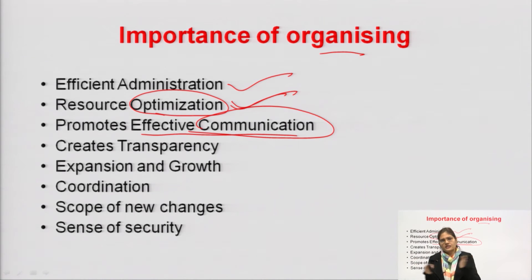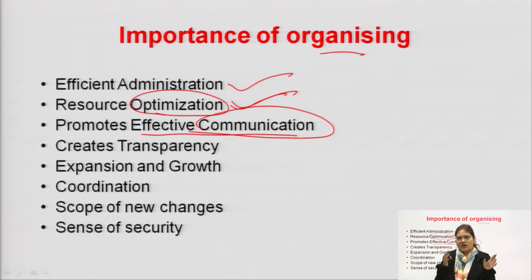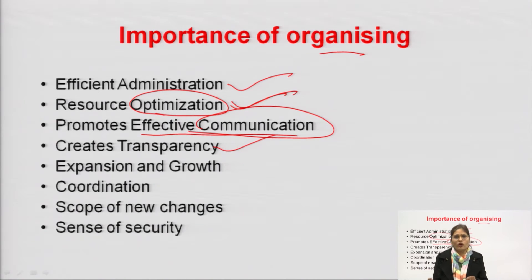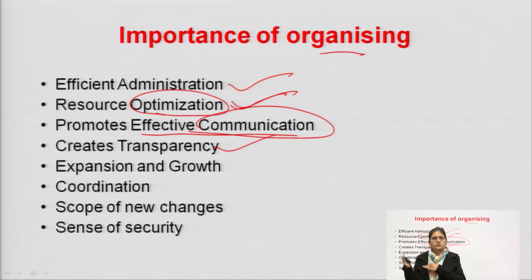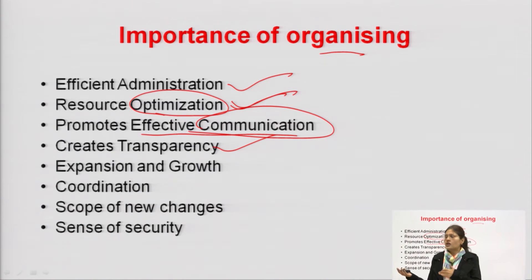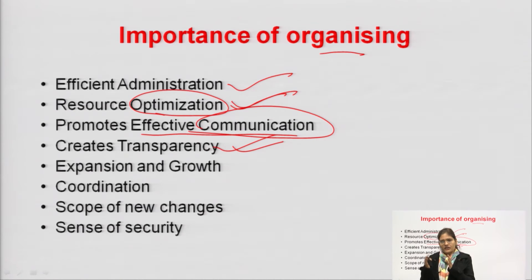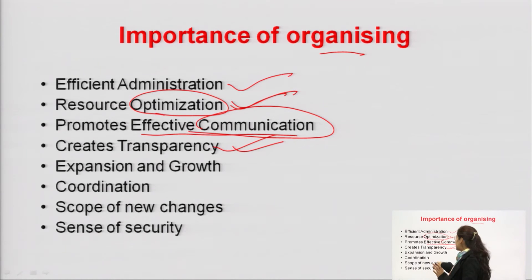Organizing creates transparency. If all the work is divided properly and allocated to different people, it is very clear in the mind of the manager and employees who is accountable for what work. There is no confusion about which person needs to do what kind of work — clarity of information means everyone knows what kind of work is done by which person.